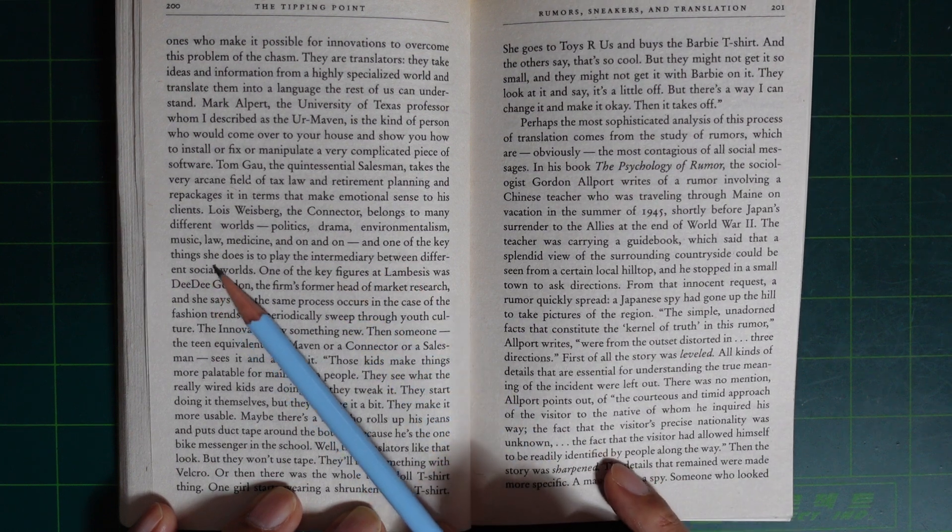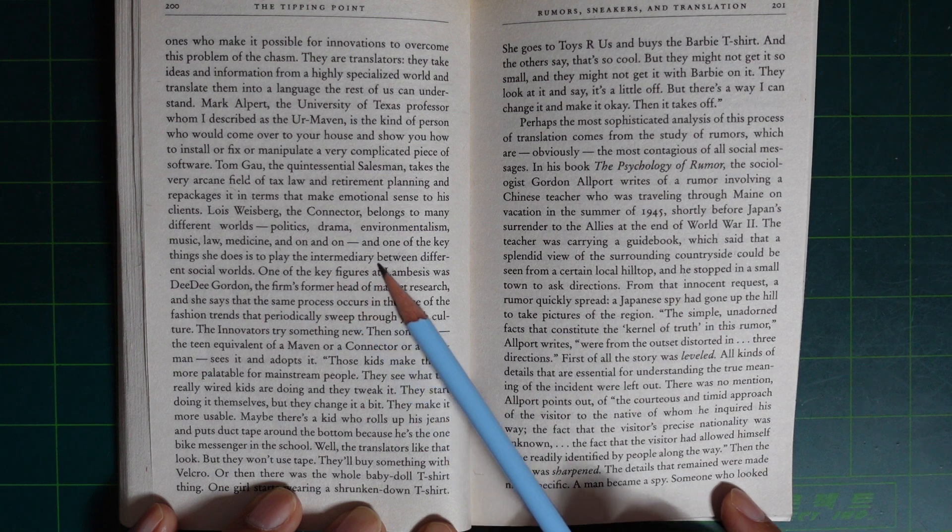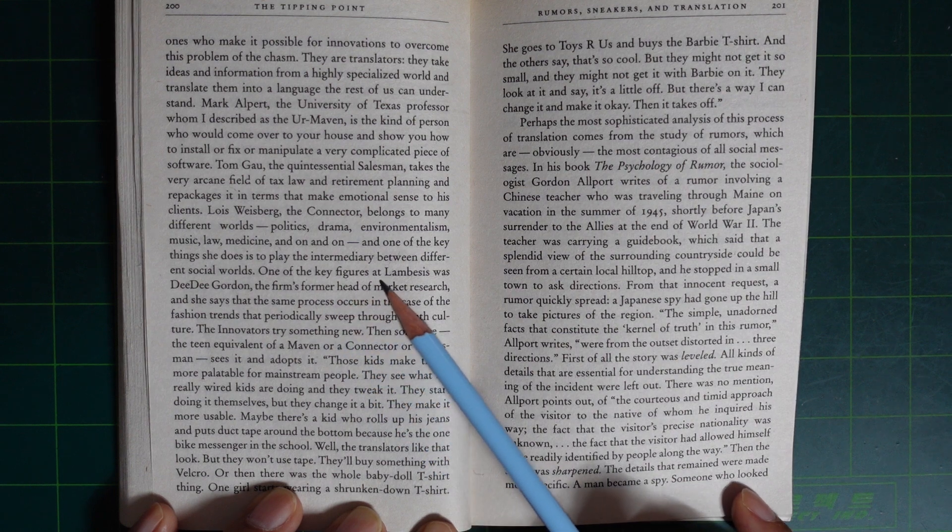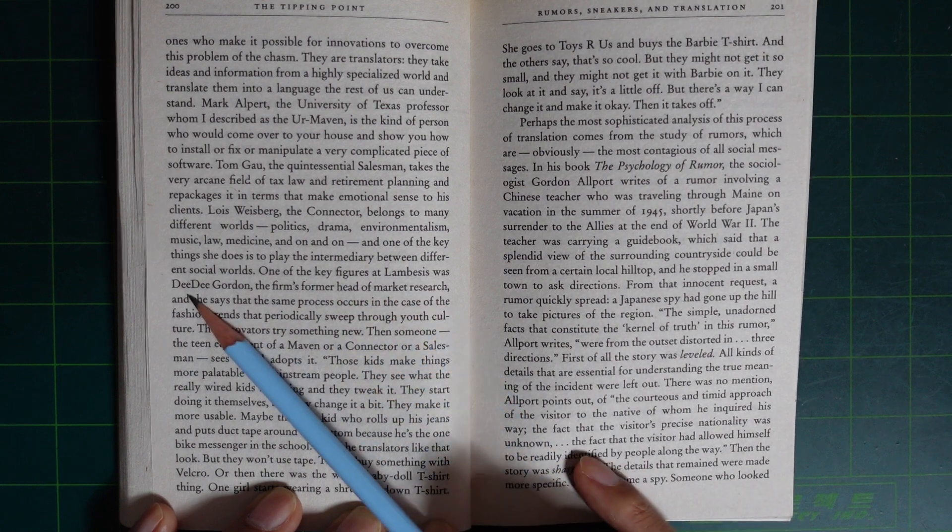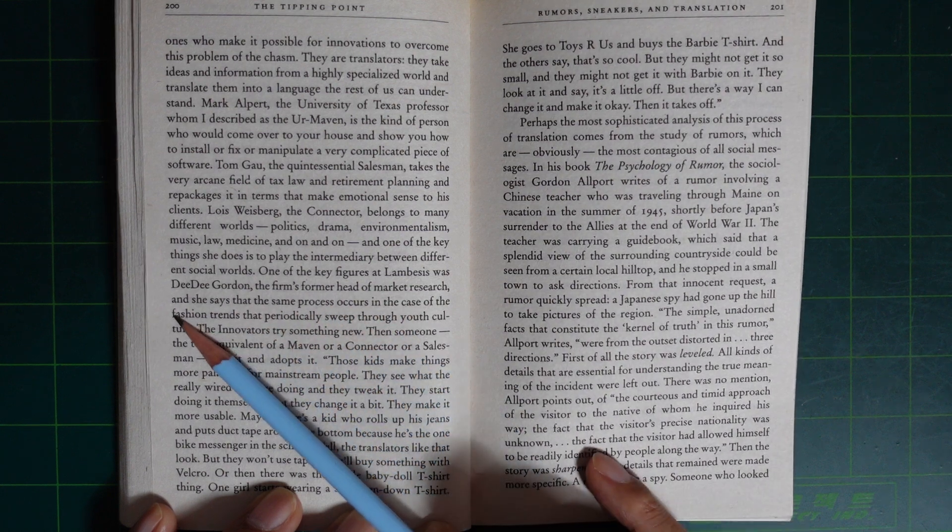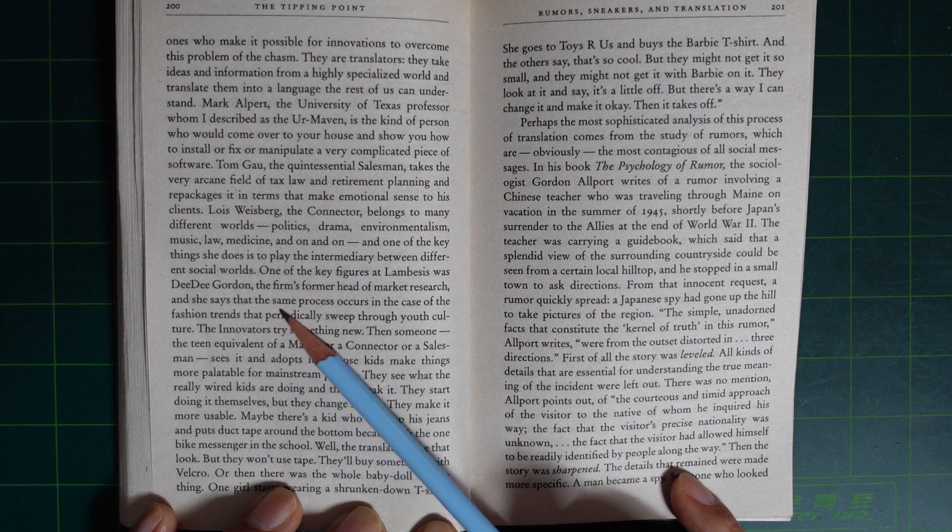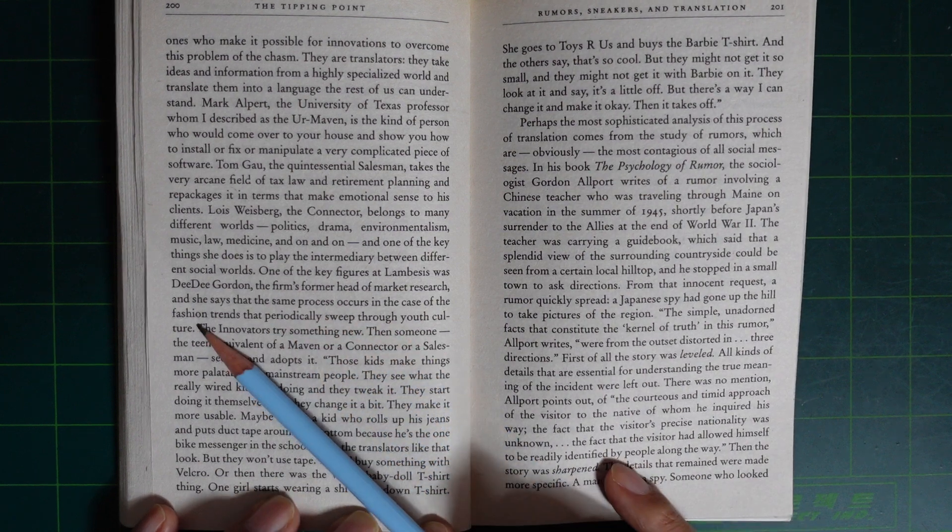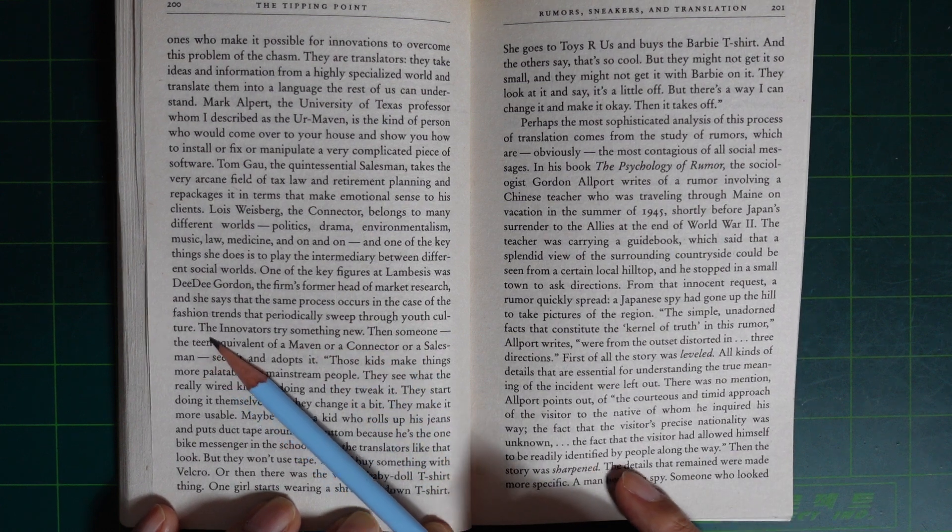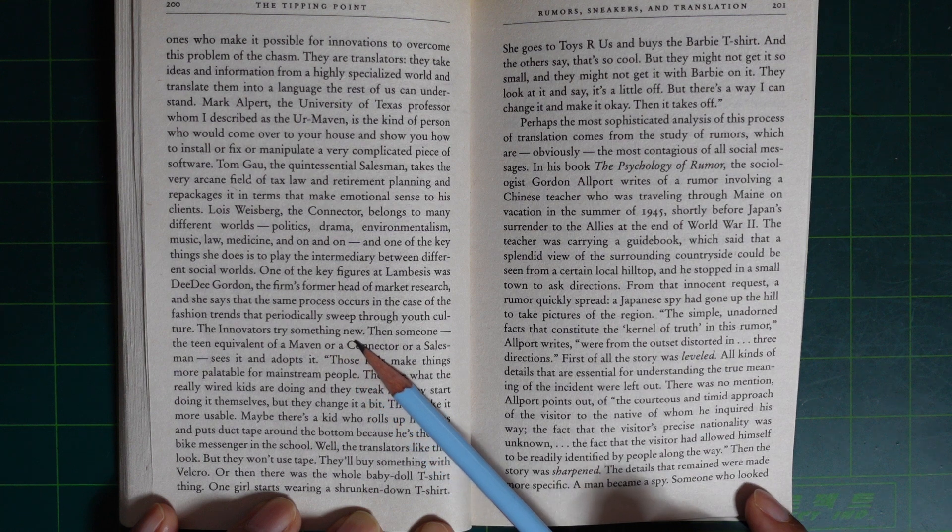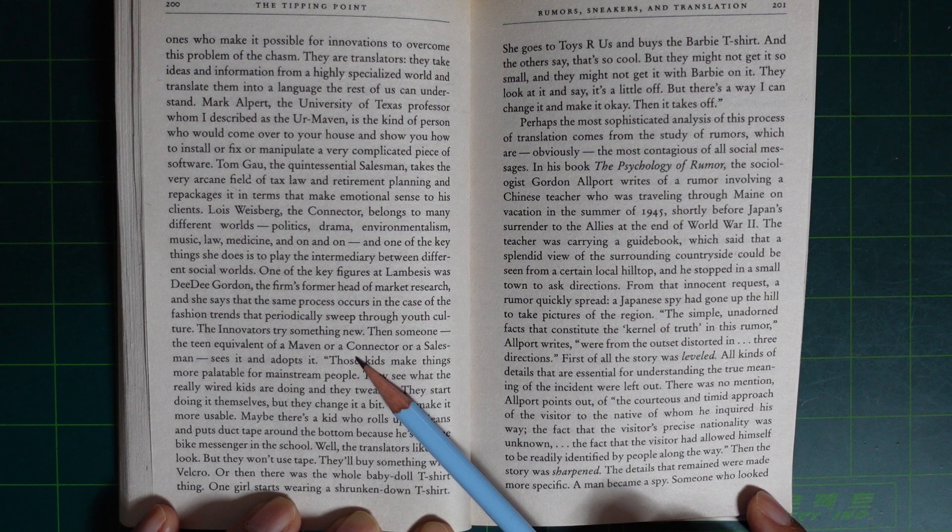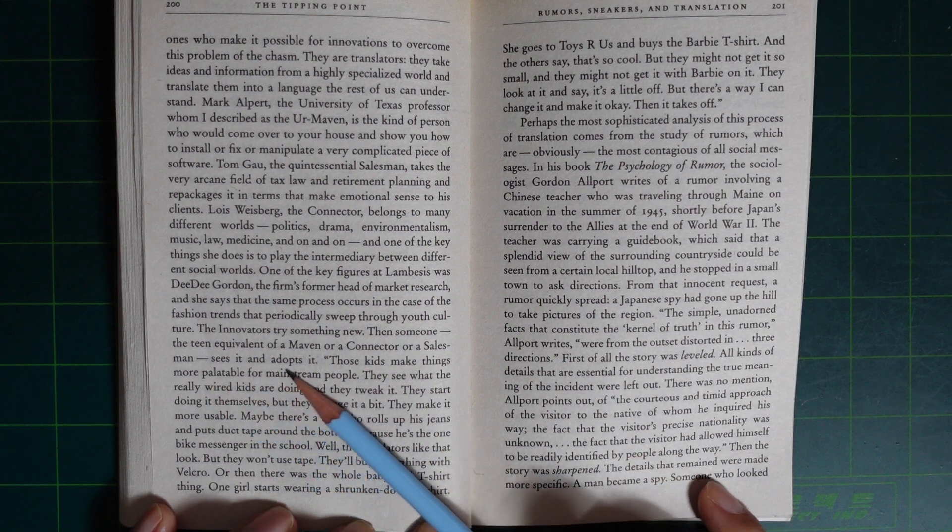One of the key things she does is play an intermediary between different social worlds. One of the key figures at Lambesis was Dee Dee Gordon, the firm's former head of market research, and she said that the same process occurs in the case of the fashion trends that have periodically shaped youth culture. The innovators try something new, then someone, the teen equivalent of the Maven or Connector or Salesman, sees it and adopts it.